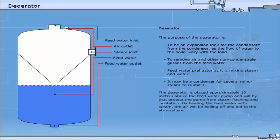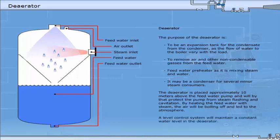The de-aerator is placed approximately 10 meters above the feed water pump and will by that protect the pump from steam flashing and cavitation. By heating the feed water with steam, the air will boil off and be led to the atmosphere. A level control system will maintain a constant water level in the de-aerator.